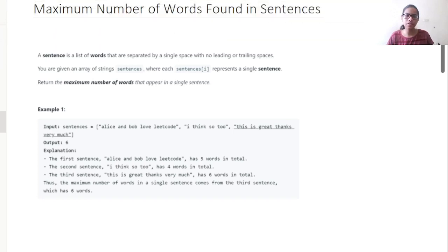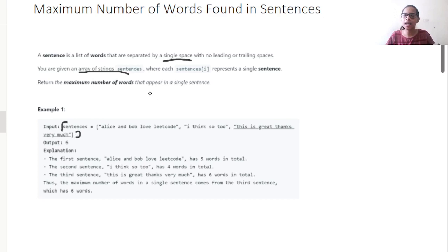First of all, we have been given the definition of a sentence. A sentence is a list of words that are separated by a single space — only a single space with no leading or trailing spaces. Now over here, we are given an array of strings called sentences. We need to return the maximum number of words that appear in a single sentence.